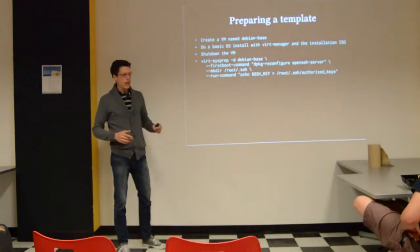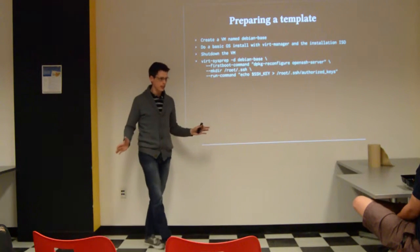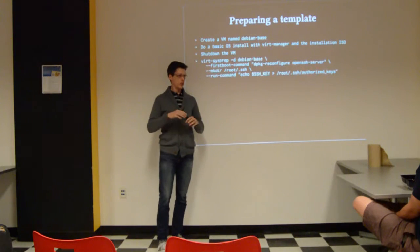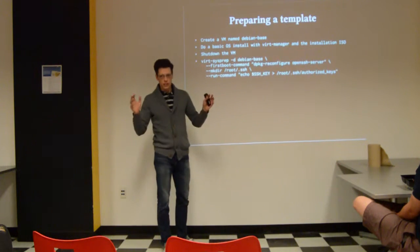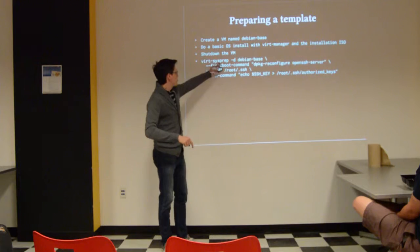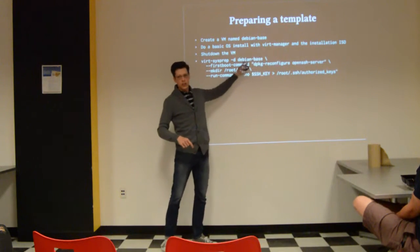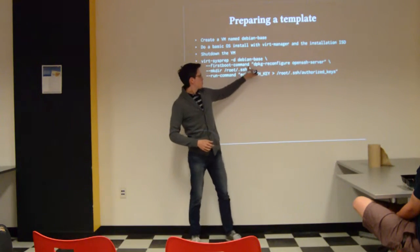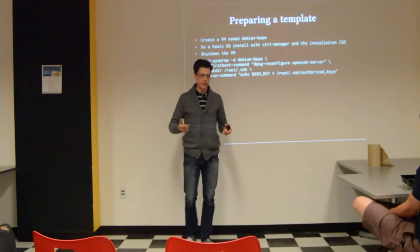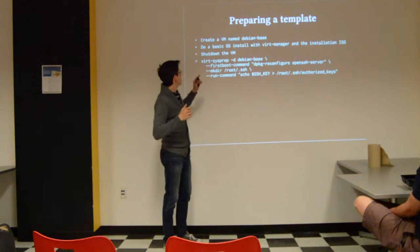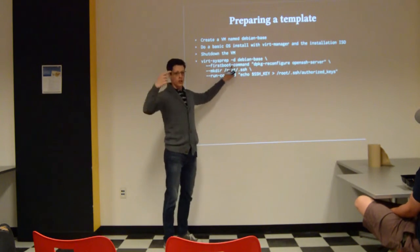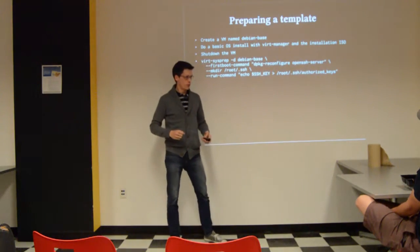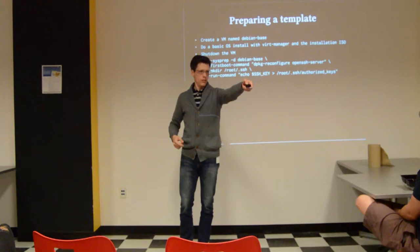To prepare a template, first I make a basic installation with no other customization than the language, keyboard layout, and so on, but no package installation. I call it 'debian-base' for the hostname. Then I shut it down and I use virt-sysprep, specifying the domain 'debian-base'. A domain is how LibVirt identifies virtual machines. I set it with a first boot command to reconfigure OpenSSH server, which will regenerate SSH host keys — of course I deleted them first. Virt-sysprep deletes the host keys, and this first boot command makes new ones from random. And I install my SSH key in the authorized keys for the root user, so I can log right into the machine as soon as it's ready.